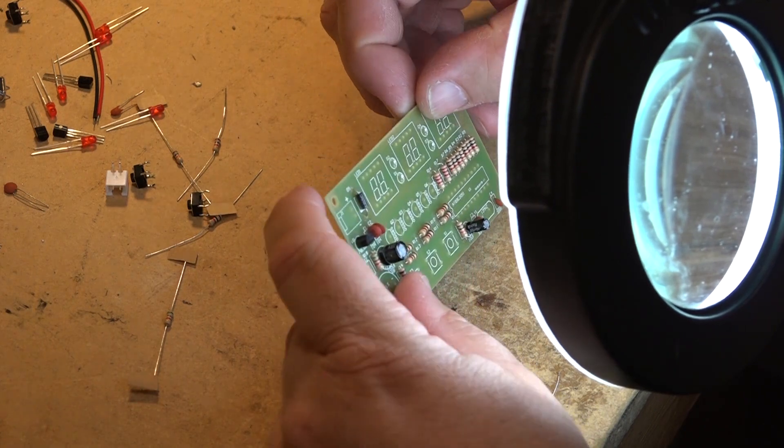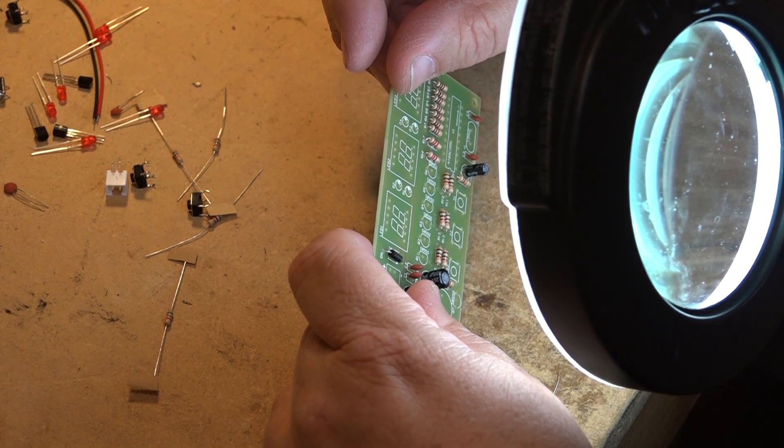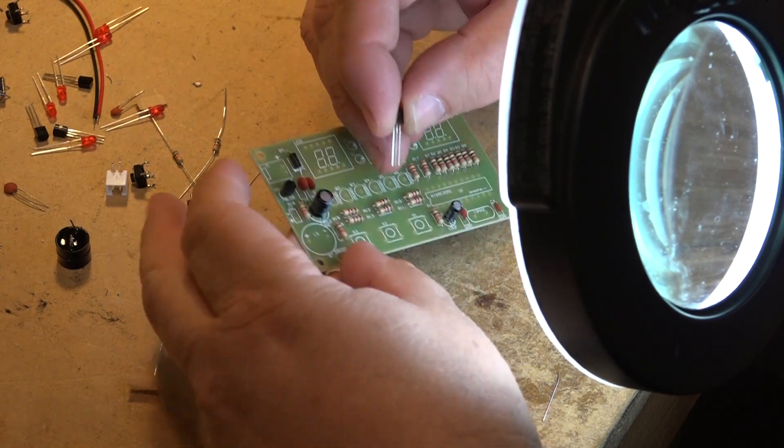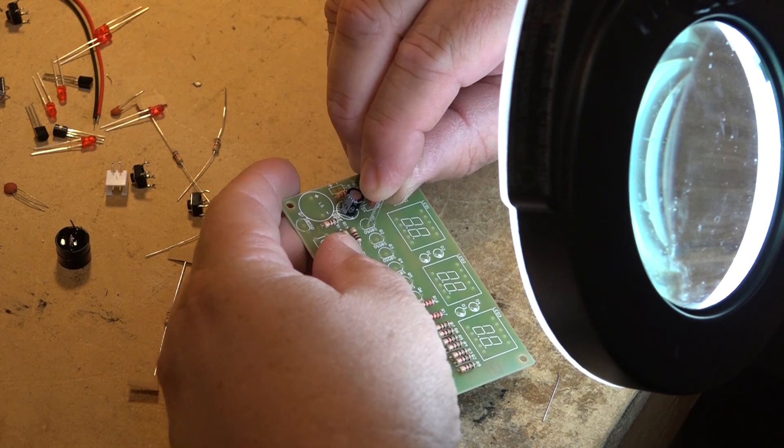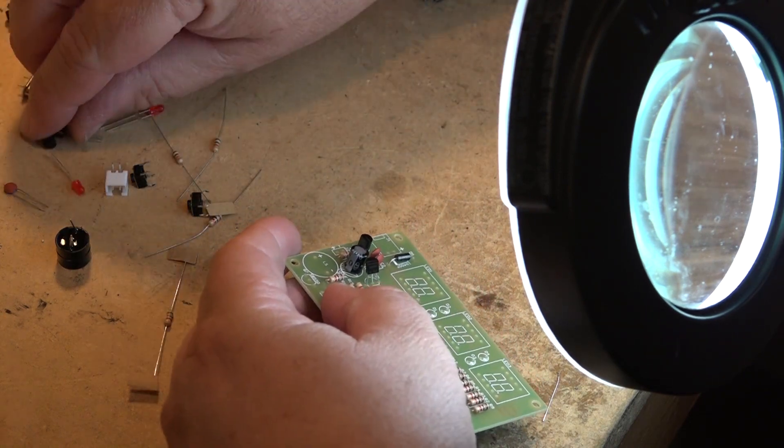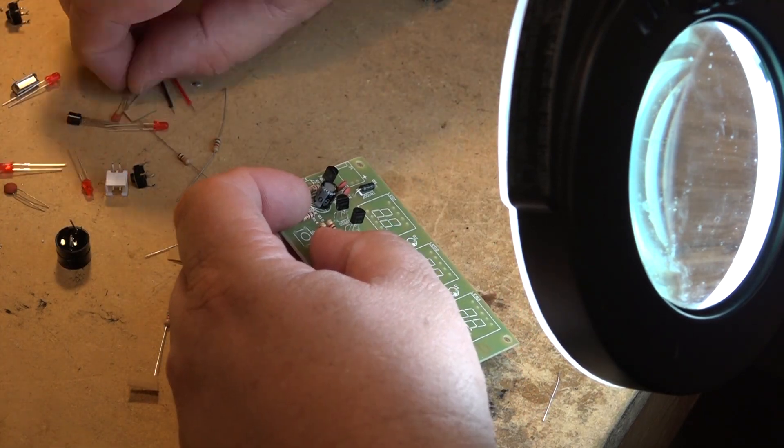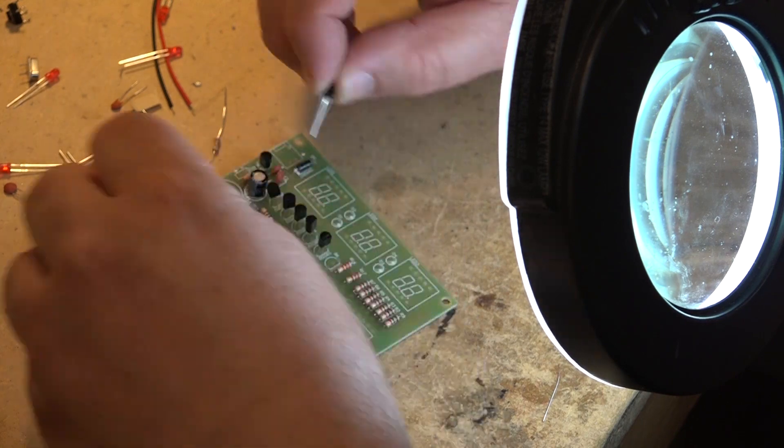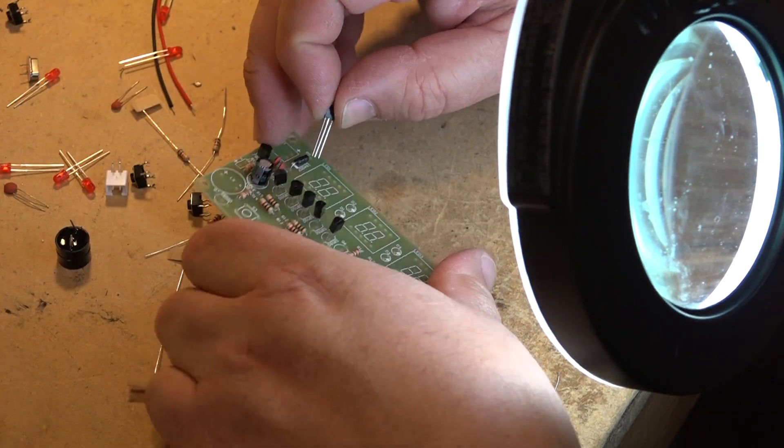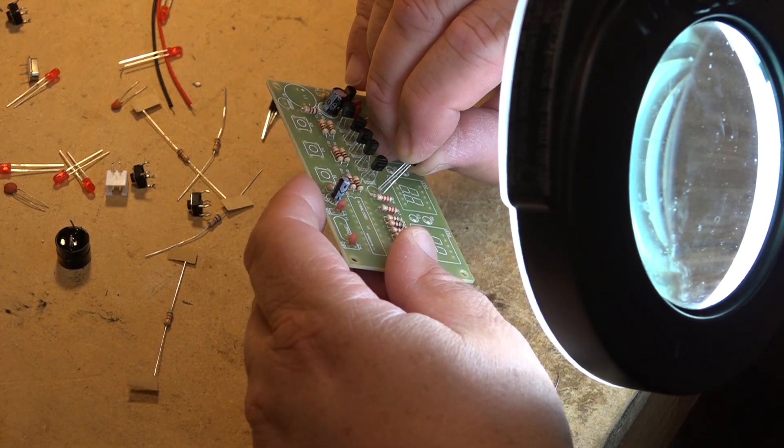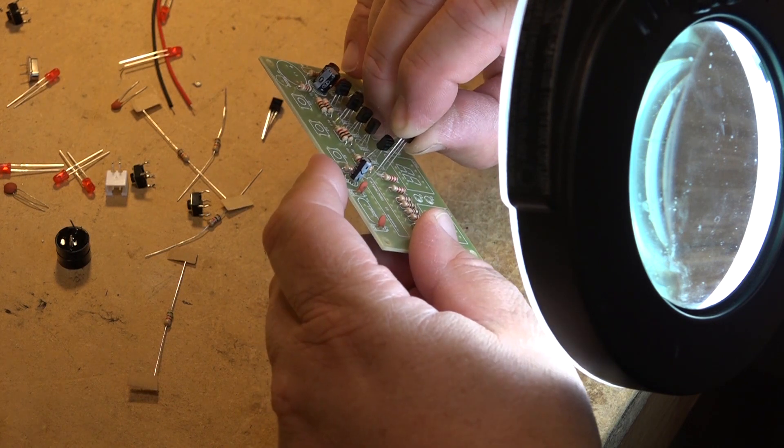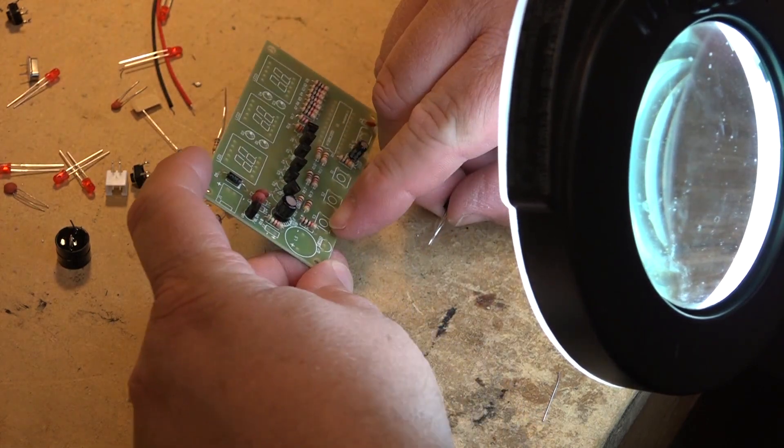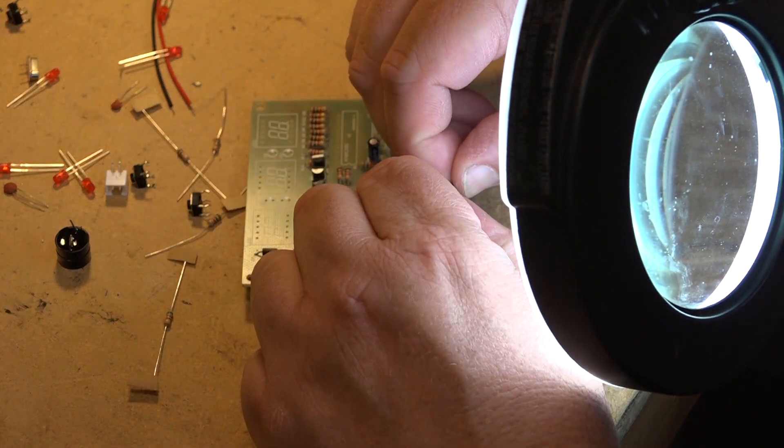Next I'll mount the transistors. There are six transistors marked S8550. They've included extra parts, I'm assuming in case someone loses one or one gets damaged. Wait, they didn't give me an extra transistor. There's another one at the bottom corner of the board. I'll mount all seven transistors in place.